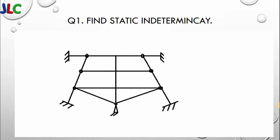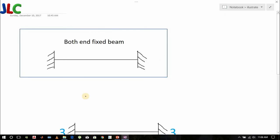We would be dealing with questions on finding static indeterminacy in the next video. Now I will illustrate static indeterminacy through an example. Here you can see a beam whose both ends are fixed.